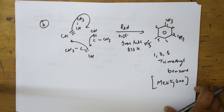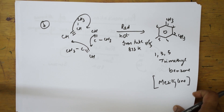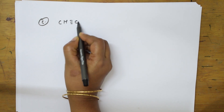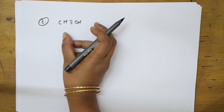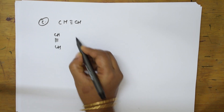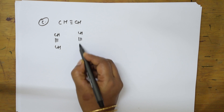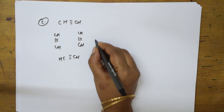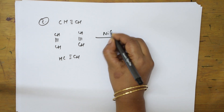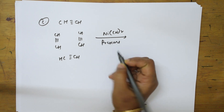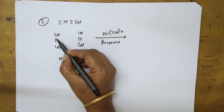This is one type of cyclic polymerization. Now let me take one more example. Suppose if I take four moles of acetylene to undergo a cyclic polymerization reaction — that is acyclic polymerization. Here you are going to introduce nickel cyanide and maintain the conditions under pressure.